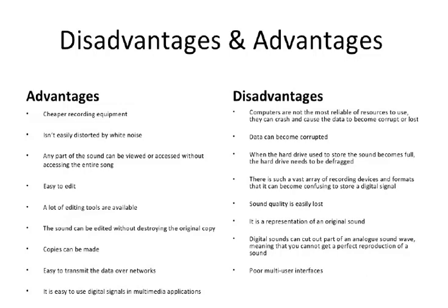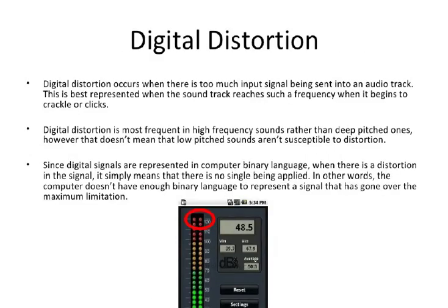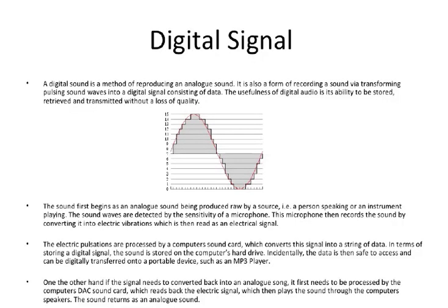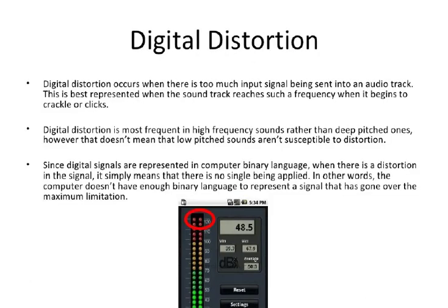Digital circuits are less affected by noise. Unwanted electrical signals are called noise, and noise is unavoidable in any system. Since in analog systems the exact values of voltages are important and in digital systems only the range of values is important, the effect of noise is more severe in analog systems. In digital systems, noise is not critical as long as it is not large enough to prevent us from distinguishing a high from a low.